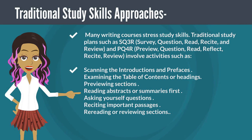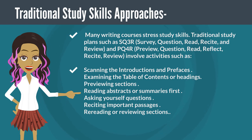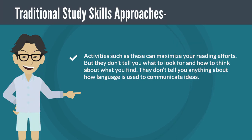Traditional Study Skills Approaches: Many writing courses stress study skills. Traditional study plans such as SQ3R — Survey, Question, Read, Recite, and Review — and PQ4R — Preview, Question, Read, Reflect, Recite, Review — involve activities such as scanning introductions and prefaces, examining the table of contents or headings, previewing sections, reading abstracts or summaries first, asking yourself questions, reciting important passages, and re-reading or reviewing sections. Activities such as these can maximize your reading efforts, but they don't tell you what to look for and how to think about what you find, and they don't tell you anything about how language is used to communicate ideas.